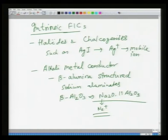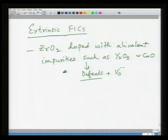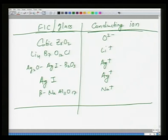Intrinsic FICs include halides and chalcogenides of silver, and alkali metal conductors like beta aluminas — these have intrinsically mobile structures because of the presence of smaller mobile ions. Extrinsic FICs are materials converted from otherwise insulating to good conductors, such as zirconium oxide doped with yttrium oxide or calcium oxide, by means of defects and open crystal structure.